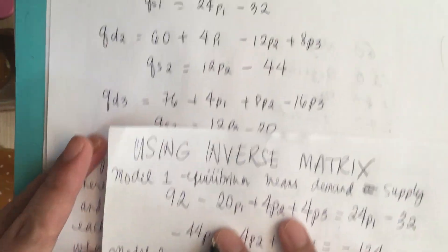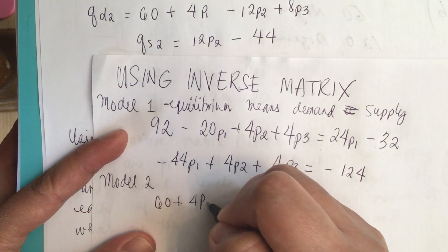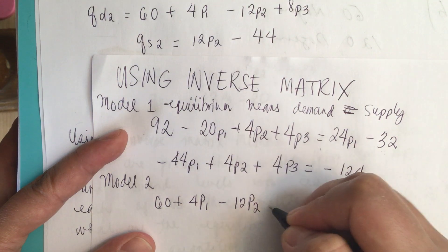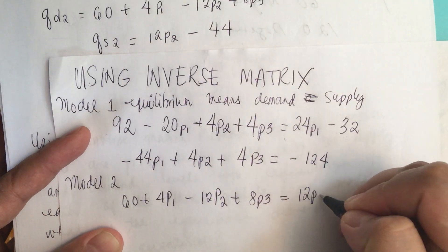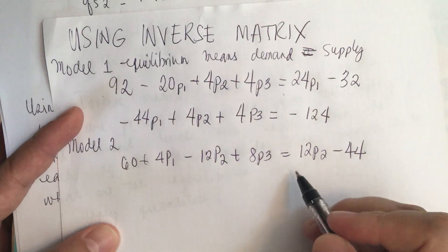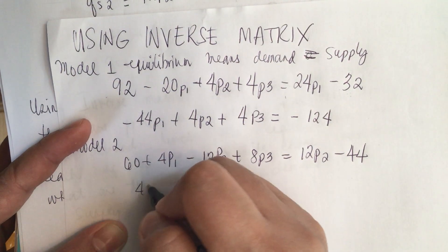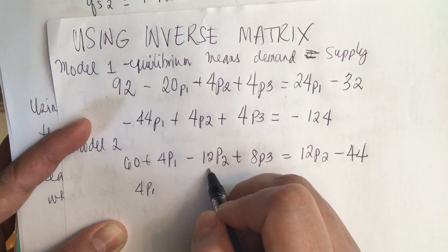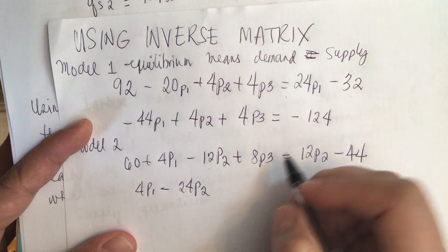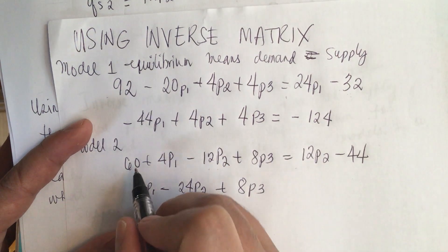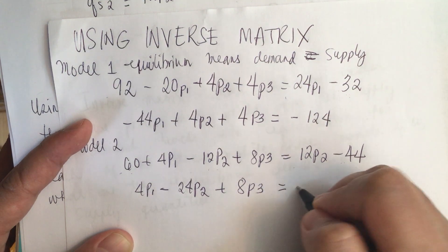For model two, we have 60 plus 4p1 minus 12p2 plus 8p3 equals the supply, which is 12p2 minus 44. Rearranging: bringing 12p2 to the left side gives minus 12p2 minus 12p2 equals minus 24p2. Moving 60 to the right side gives minus 60 minus 44 equals minus 104. So: 4p1 minus 24p2 plus 8p3 equals minus 104.